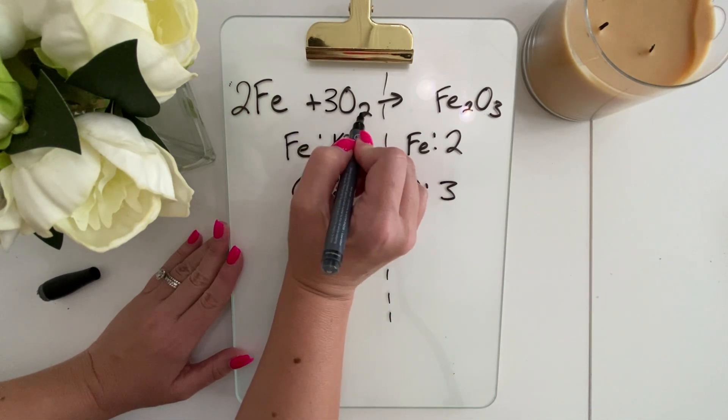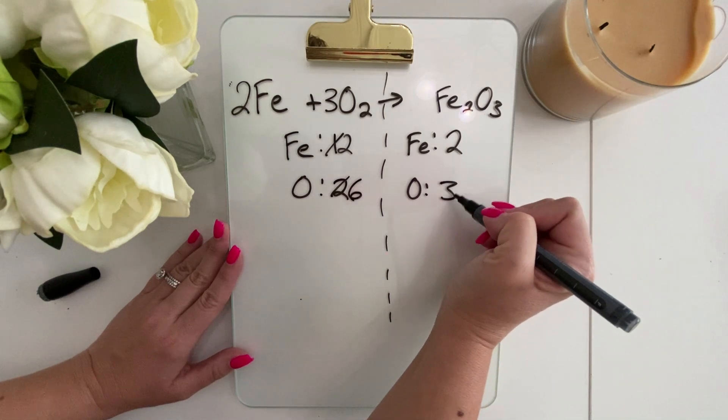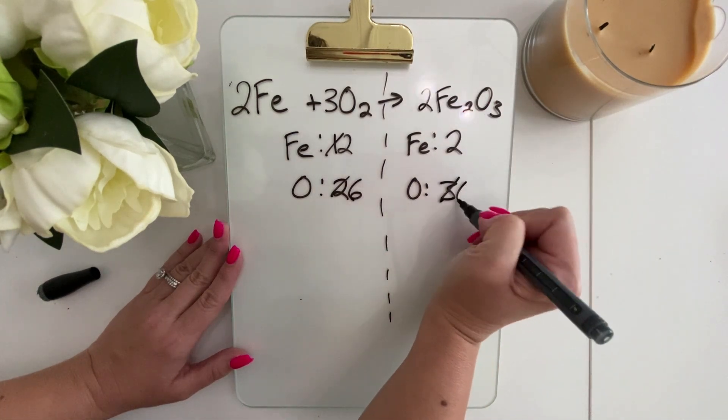So we're going to put the three in front here to give us six and then over here we're going to put the two in front so that we can be six.